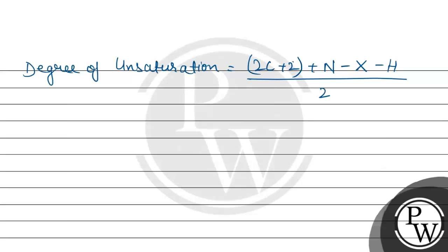Here C represents the number of carbon atoms. N represents the number of nitrogen atoms.